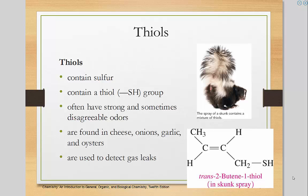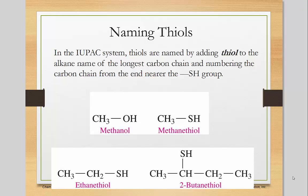Thiols are very similar to alcohols, except that thiols have sulfur instead of oxygen. They have very strong, unpleasant smells associated with them — for instance, cheeses, onions, and garlic. They actually add a thiol to natural gas so we can smell if there's a gas leak. The IUPAC way of naming thiols is simply by adding 'thiol' to the end of the word — name it as if it was a straight chain, and then put thiol at the end.